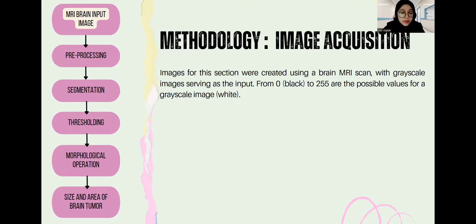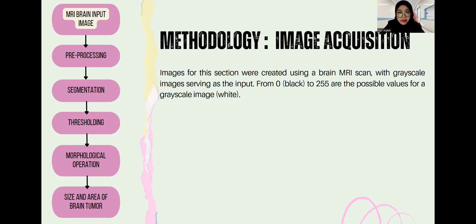For the first methodology, which is MRI brain input image: we use image acquisition. The image section is created using a brain MRI scan. The input ranges from zero, which is black, to 255, which are the possible values for a greyscale image ending at white.